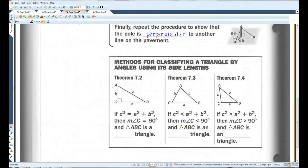Alright. Methods for classifying a triangle by angles using its side lengths. This is just a review of the theorems we just learned. If the Pythagorean works, if C squared equals A squared plus B squared, you have a right triangle. If C squared is less than that, it's an acute triangle. If C squared is greater, obtuse triangle. So this is just repeating everything we just learned on the previous couple pages.